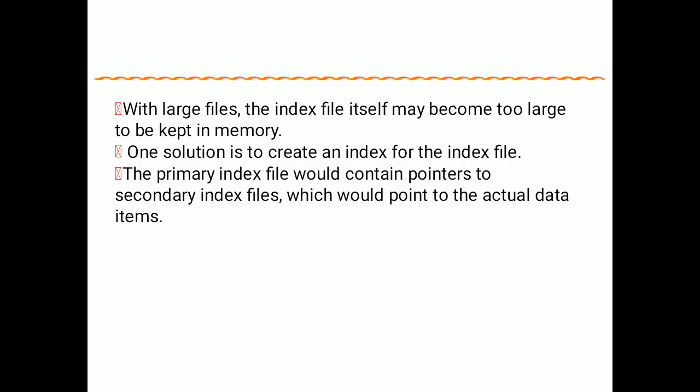With large files, the index file itself may become too large to be kept in memory. To avoid this drawback, one solution is to create an index for the index file. A primary index file would contain pointers to a secondary index file, which would then point to the actual data.